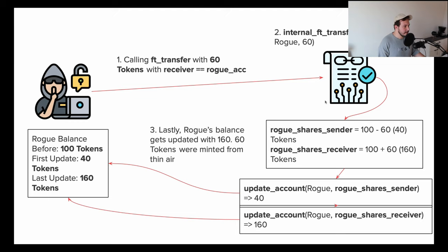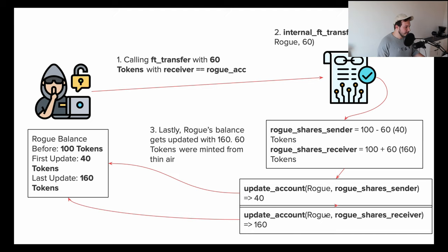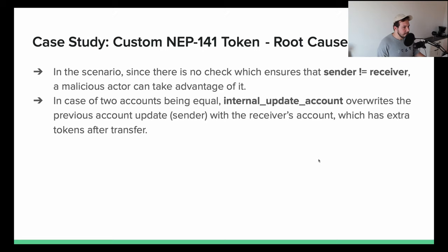Imagine a hacker calls ft_transfer with 60 tokens and puts their own account as the receiver. Sender and receiver are exactly the same. Internal_ft_transfer is from rogue to rogue with 60. Rogue's sender shares are 100 minus 60 = 40, and rogue's receiver shares are 100 plus 60 = 160. When we call update_account first with sender shares 40, then again with receiver shares 160 — since rogue's key points to the same account, the 40 gets overwritten by 160. So 60 tokens were minted from thin air.